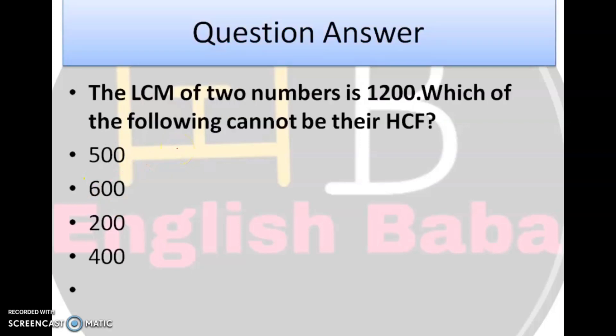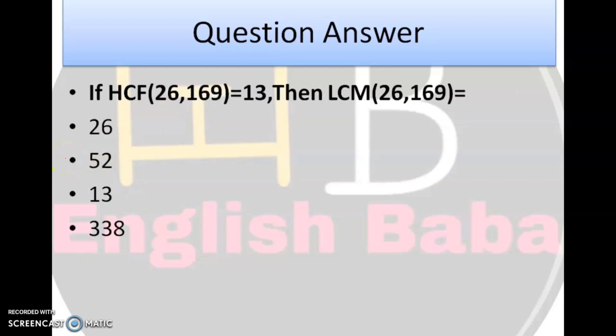Next question. The LCM of 2 numbers is 1200, which of the following cannot be their HCF? LCM diya hoa hai hai, 2 number ka 1200. Ab aap iske options dekhiay, 500, 600, 200, 400. LCM of 2 or more numbers, jo bhi LCM hoota hai, wun hamisha divisible by hai, uske HCF se. So aap dekhenge, 1200 divisible hai kis se? 600 se, 1200 se, 400 se. Kis se divisible nahi hai? Woh divisible number nahi hai, 500 se. To aap ka right answer hai, 500.